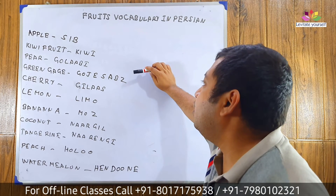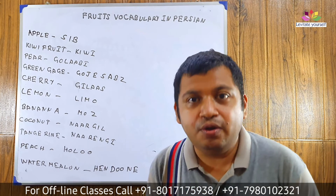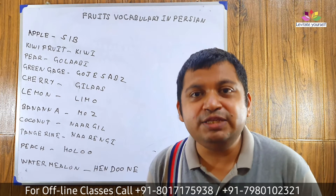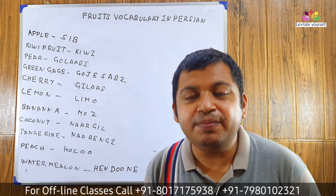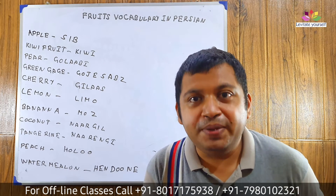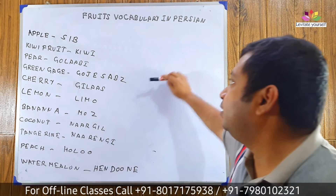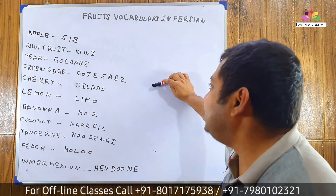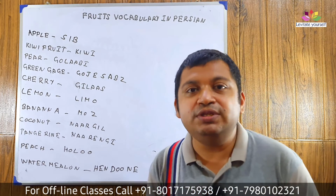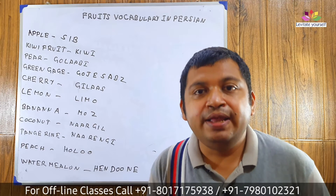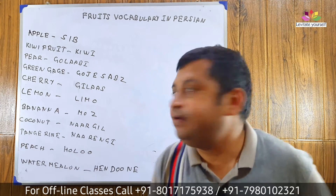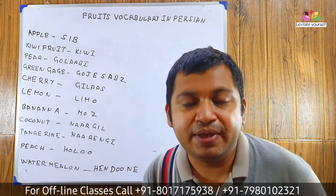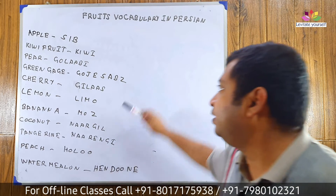Pear: Golabi. Pear: Golabi. Come to the next word. Greengage: Gojeh Sabz. Let's pronounce it with me: Gojeh Sabz. Let's move to the next word.